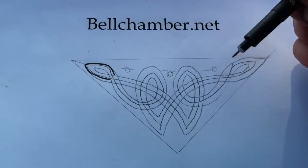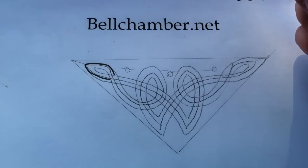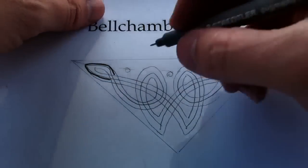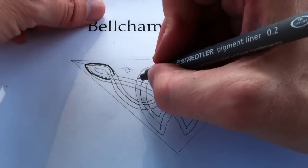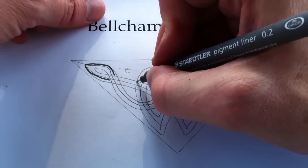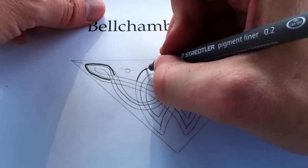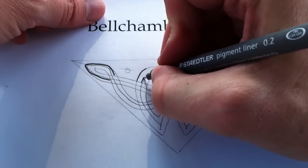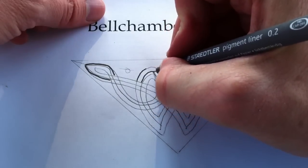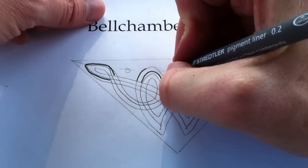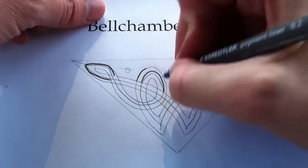I'm taking my .2 Stedler pen, and what I'm going to start doing is starting from this corner, I'm going to start drawing the ribbon and making it equidistant from your spine.